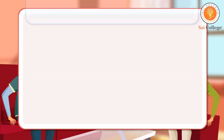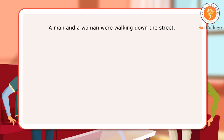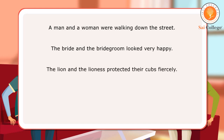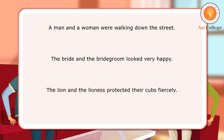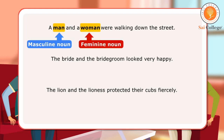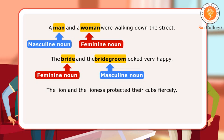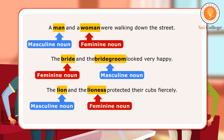Let us look at a few sentences. A man and a woman were walking down the street. The bride and the bridegroom looked very happy. The lion and the lioness protected their cubs fiercely. In the first sentence, man is a masculine noun as it represents a male and woman is a feminine noun as it represents a female. In the next sentence, bride is feminine and bridegroom is masculine. In the third sentence, lion is masculine while lioness is feminine.